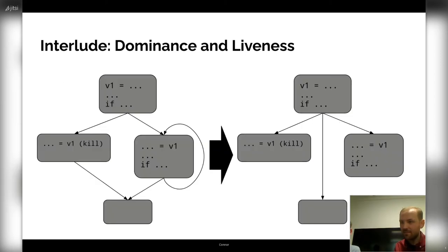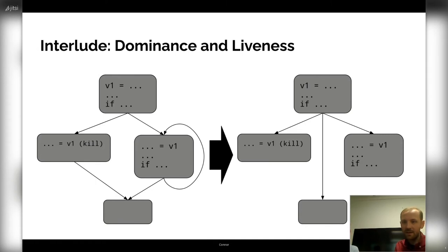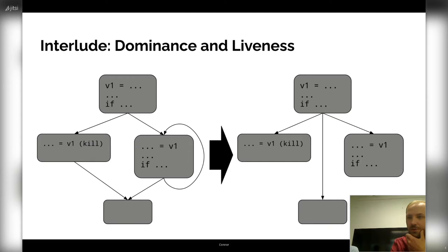An important fact about the dominance relation is that it forms a tree. Given a program organized into basic blocks, the blocks can be put into a tree where A dominates B only if A is B's ancestor in the tree. The key theorem which makes SSA-based register allocation possible is that the live range of an SSA value — the places where it is live — forms a subtree of this dominance tree, rooted at the definition. For example, the live range of V1 is a subtree of the entire dominance tree.